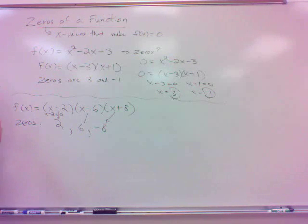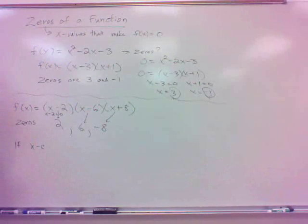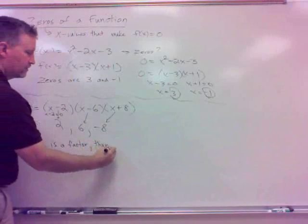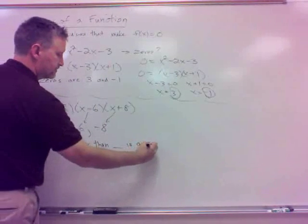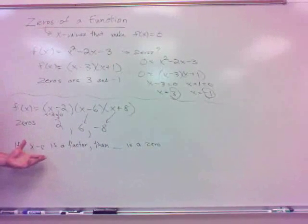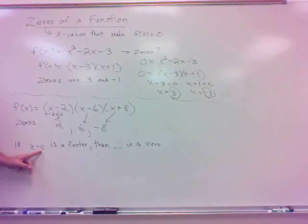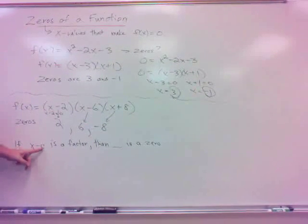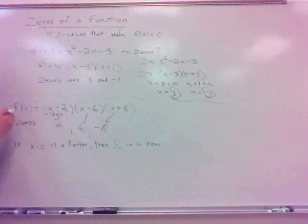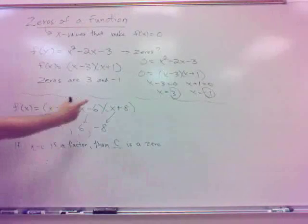To generalize: if x minus c is a factor — c being some number — then c is a zero. For example, if x minus 1000 was a factor, then 1000 would be a zero. So if x minus c is a factor, then c, the number subtracted from x, is the zero.